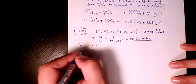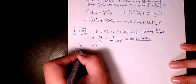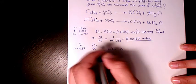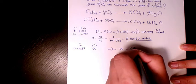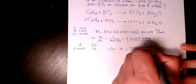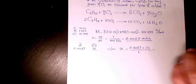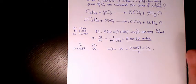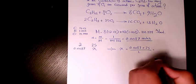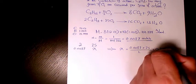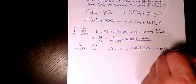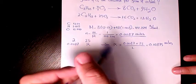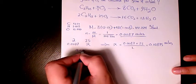We have 2 moles of octane to 25 moles of oxygen. Now if we have 0.0087 moles of octane, how many moles of oxygen? We cross multiply and get 0.10875 moles of oxygen.